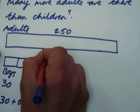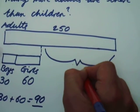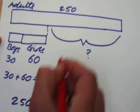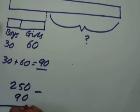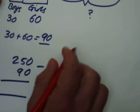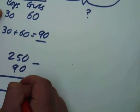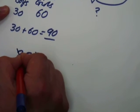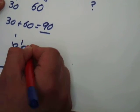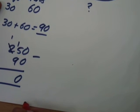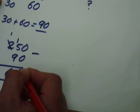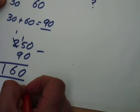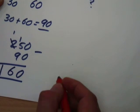I now need to work out what this part here is worth. So I'm going to take my 250 adults from the top and subtract 90 using the formal subtraction method. So 0 take away 0 leaves me with 0. I can't do 50 take away 90, so I'm going to exchange 100 and put it onto my 10s. 150 take away 90 will leave me with 60, and I've got 100 left. So my answer is that there are 160 more adults than children.